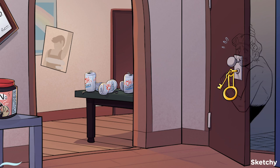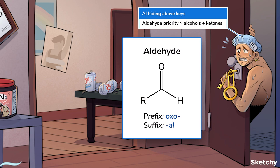And next up, you see Al hiding behind the bathroom door? Either he forgot his towel, or he's morbidly afraid of dachshunds. Either way, Al hiding represents aldehydes. Aldehydes are higher priority than alcohols and ketones. Aldehydes are similar to ketones since they both have a carbonyl group — a C=O double bond — but for aldehydes, the carbonyl is located at the end of a carbon chain instead of in the middle. Aldehydes are named with the oxo prefix, or the -al, A-L, suffix, depending on their priority.